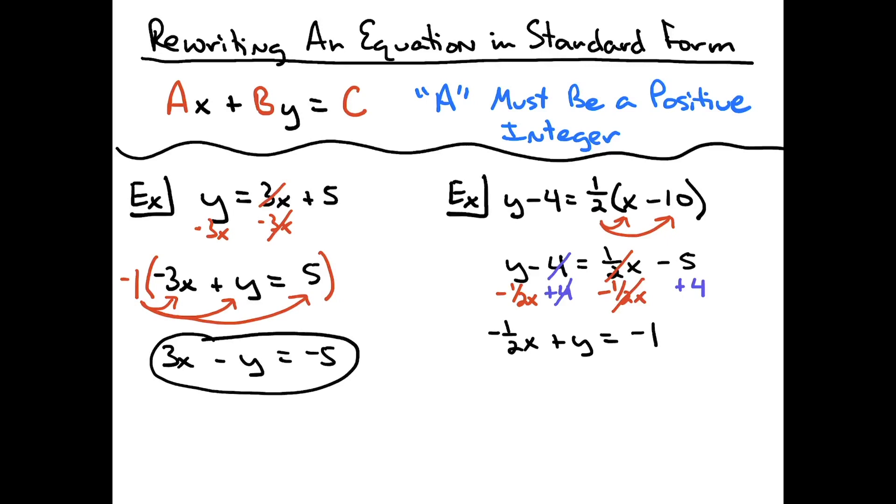So this time, I need to multiply through by that least common denominator. If I multiply through by a 2, that'll get rid of the fraction. If I multiply through by the negative, that will make the negative go away. So I'm going to multiply through by a negative 2. And I'm going to distribute that to each one of the terms.